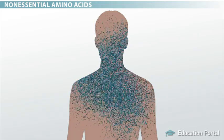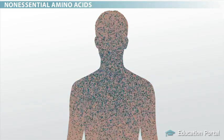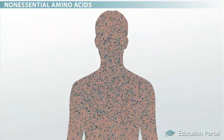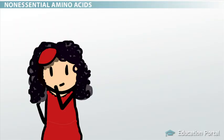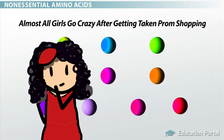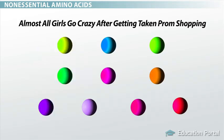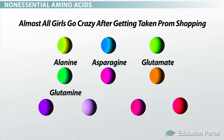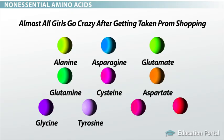As we learned, these can be made by your body using available substances or through metabolic processes. The non-essential amino acids can be remembered by using the mnemonic 'Almost All Girls Go Crazy After Getting Taken Prom Shopping,' which stands for alanine, asparagine, glutamate, glutamine, cysteine, aspartate, glycine, tyrosine, proline, and serine.